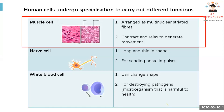Muscle cells are arranged as multinuclear striated fibers, and they contract and relax to generate movement. When we want to move — for example, when we play basketball — this involves contraction and relaxation of the muscle cells. The word multinuclear means more than one nucleus.